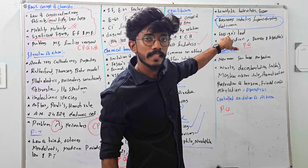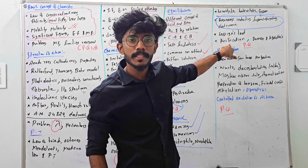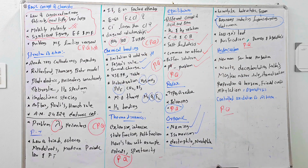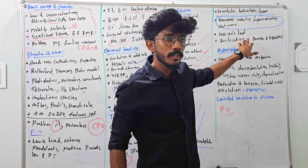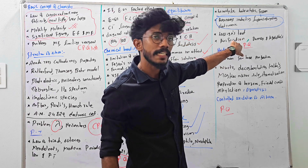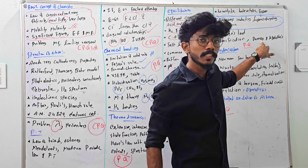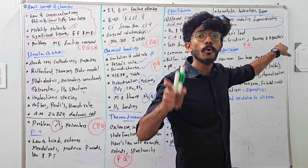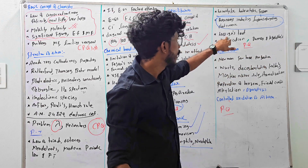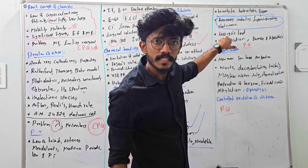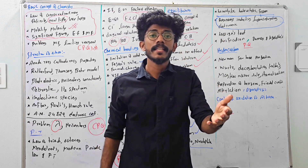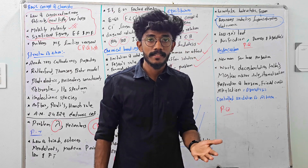Next, lassaigne's test. Let's try to examine purification methods: distillation, fractional distillation, and distillation under reduced pressure. Let's try to examine the purification methods. Next, Dumas method and Kjeldahl's method for nitrogen quantitative estimation. Dumas and Kjeldahl's method. What is nitrogen, chlorine, bromine, iodine? Qualitative analysis.